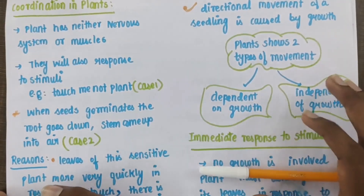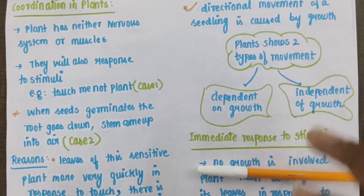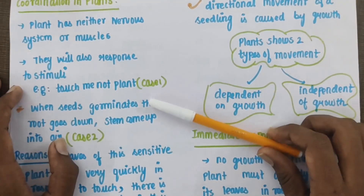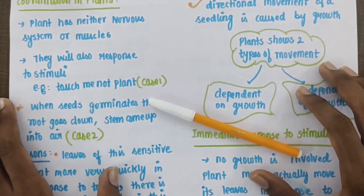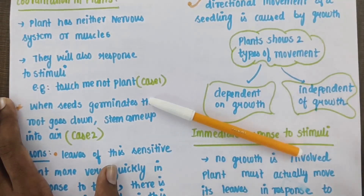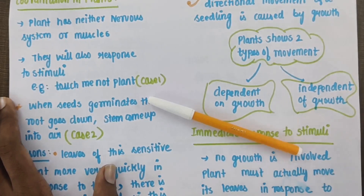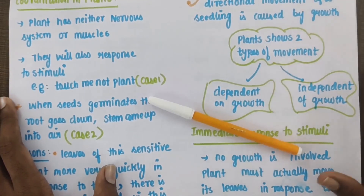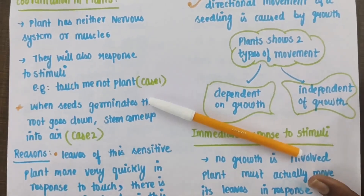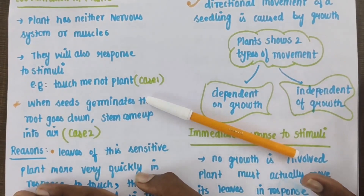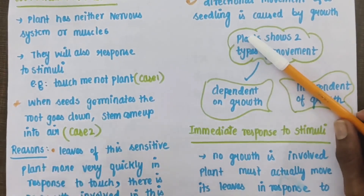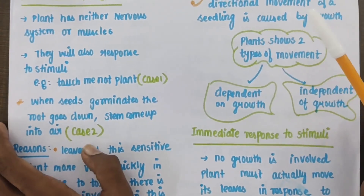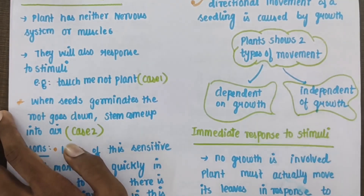Now we will get started with the concept of coordination in plants. Plants respond to external stimuli. They follow external stimuli and factors. Now, in animals there are neurons, but a plant can't run away — it is fixed to one place. So in plants there is coordination with the external environment, and there will be a response to that. Plants have neither neurons nor muscles, yet they also respond to stimuli.